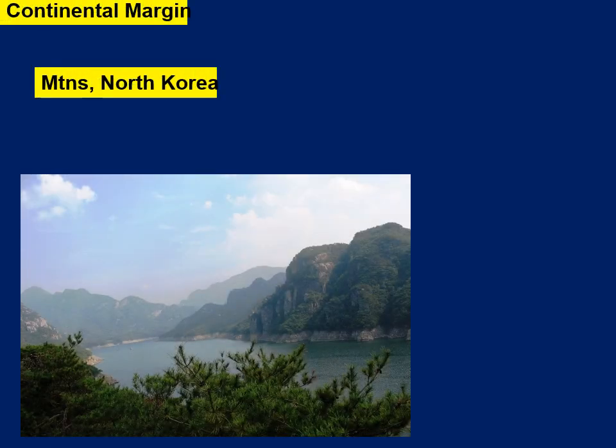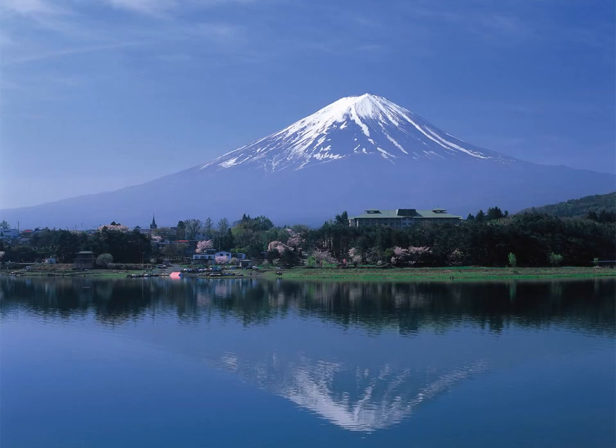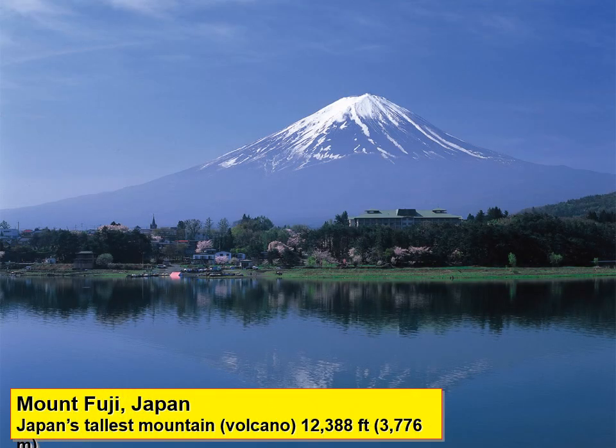In our continental margin we do find mountains, including Mount Fuji in Japan — probably the one everyone is most familiar with because it is on all the postcards. It is an active volcano, and we are on the Ring of Fire, so there is active volcanic activity occurring in this region.